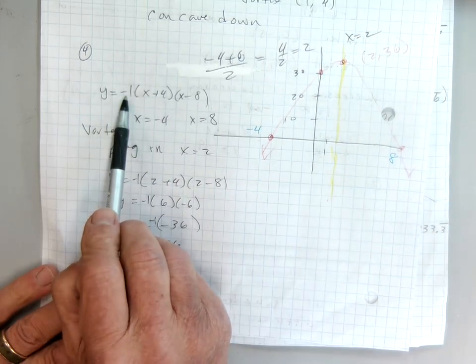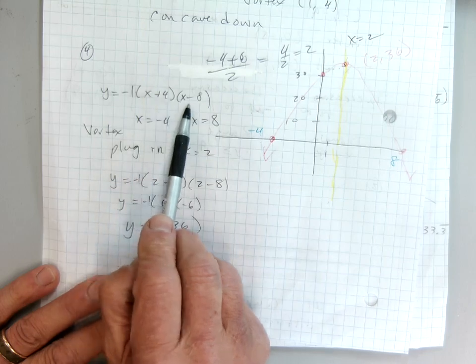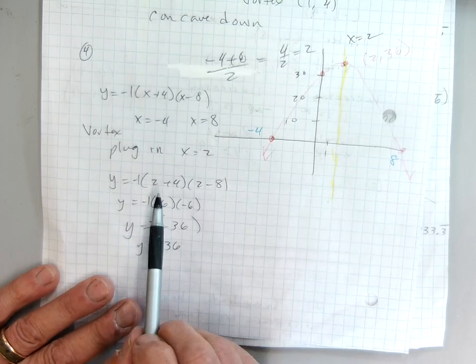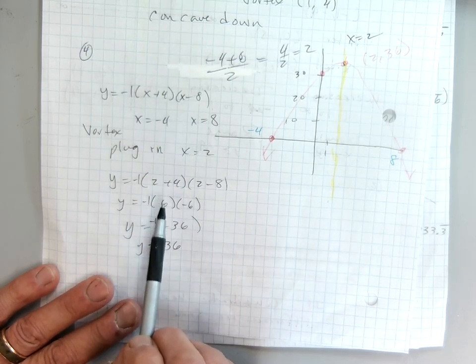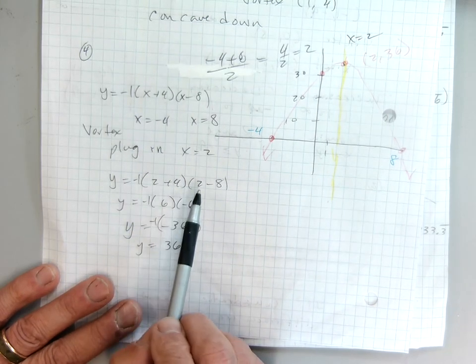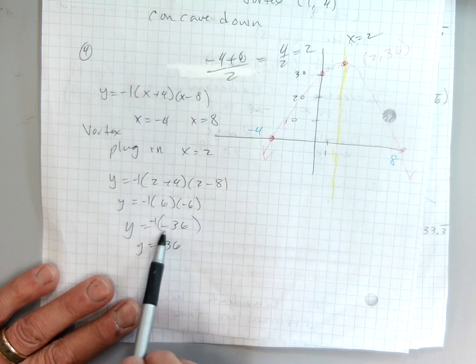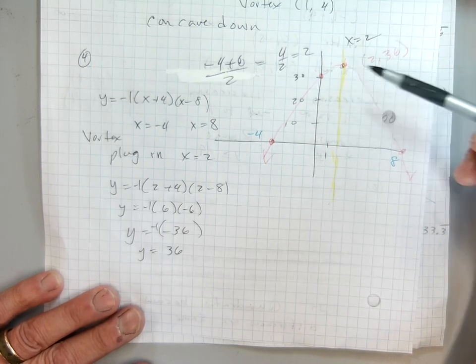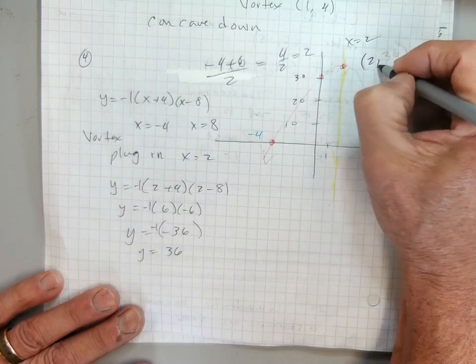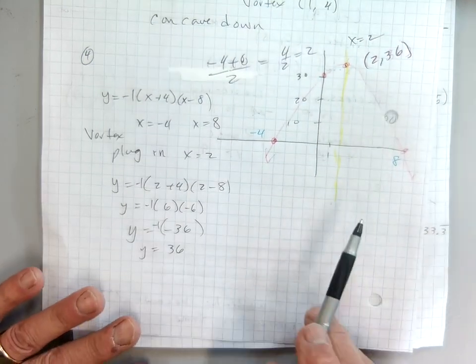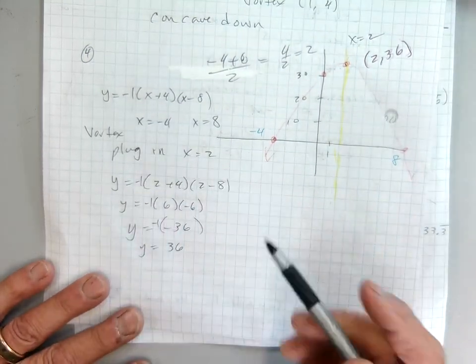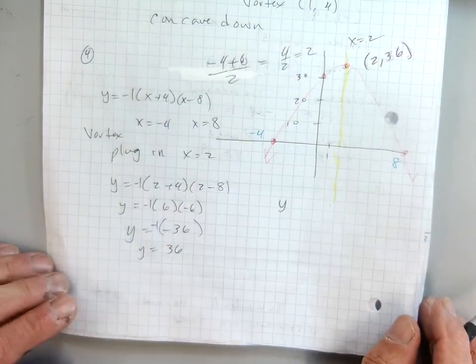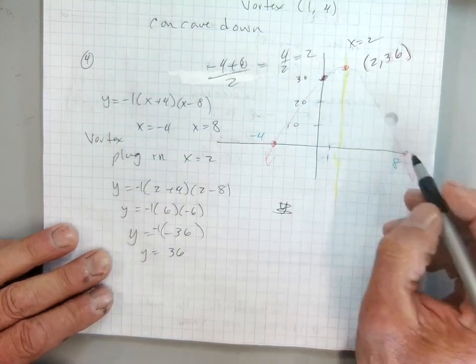So my equation is negative 1 for sure, x plus 4, x minus 8. And then what I need to do is plug in my 2. So I plugged in 2 for x, plugged in 2 here and here. 2 plus 4, 2 minus 8. So I get positive 36, which is the y value of the vertex. So my vertex is at 2, 36. Now I need the y-intercept. Actually, I was told the y-intercept. The y-intercept was given to me right there.